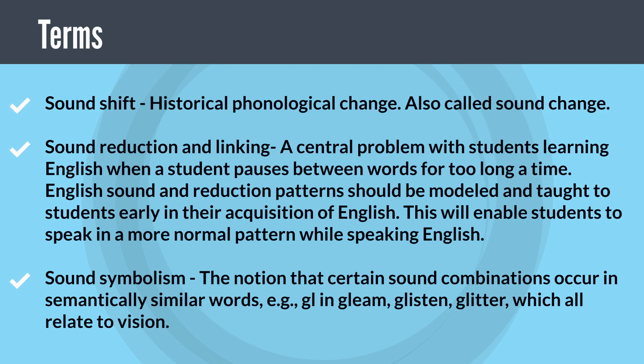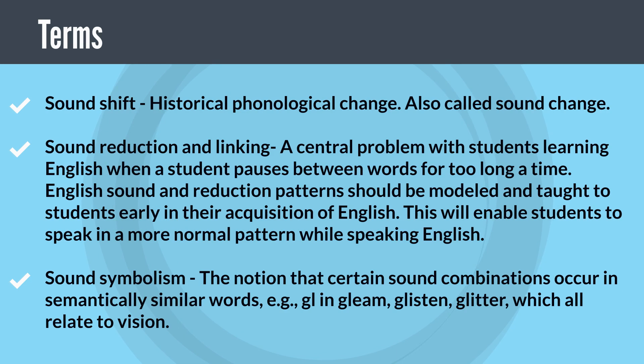Sound symbolism: the notion that certain sound combinations occur in semantically similar words. For example, 'gl' in gleam, glisten, and glitter, which all relate to vision.